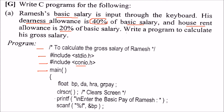Inside the opening brace, we'll declare BP (basic pay), dearness allowance, HRA, and gross pay as float. We can clear the screen — not mandatory but good practice. Then we'll show the user a prompt: 'Enter the basic pay of Ramesh.'